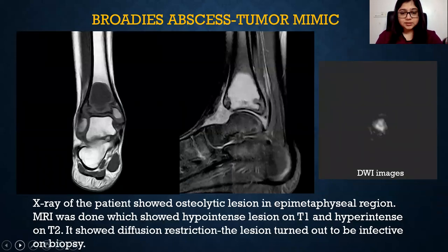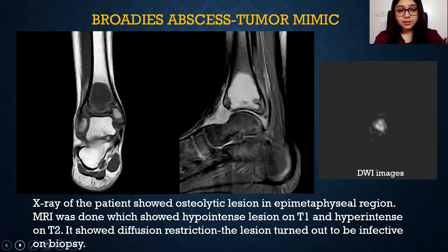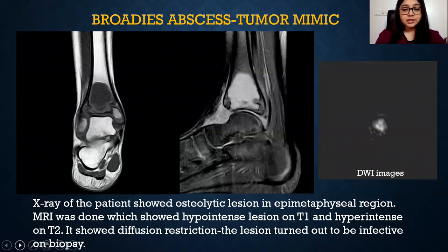Tumor mimic — infection: this patient presented with lower limb pain and swelling, with no fever and restriction of movement. X-ray showed a well-defined osteolytic lesion in the epimetaphyseal region, initially thought to be a bone tumor. MRI showed a hypointense lesion on T1, hyperintense on T2, with diffusion restriction. It turned out to be an infective etiology confirmed on biopsy, making it a tumor mimic.